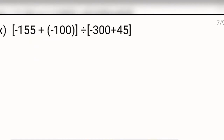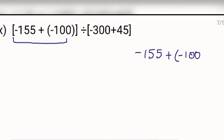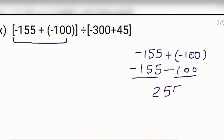Next, part 10. Firstly, solve the bracket again. This bracket: minus 155 plus minus 100. Open the bracket: minus 155 plus minus 100. Signs of both numbers are same, so values will be added. Adding them gives 255, and the sign will be of the greater number which is minus. So after calculating the first bracket, you are getting minus 255.